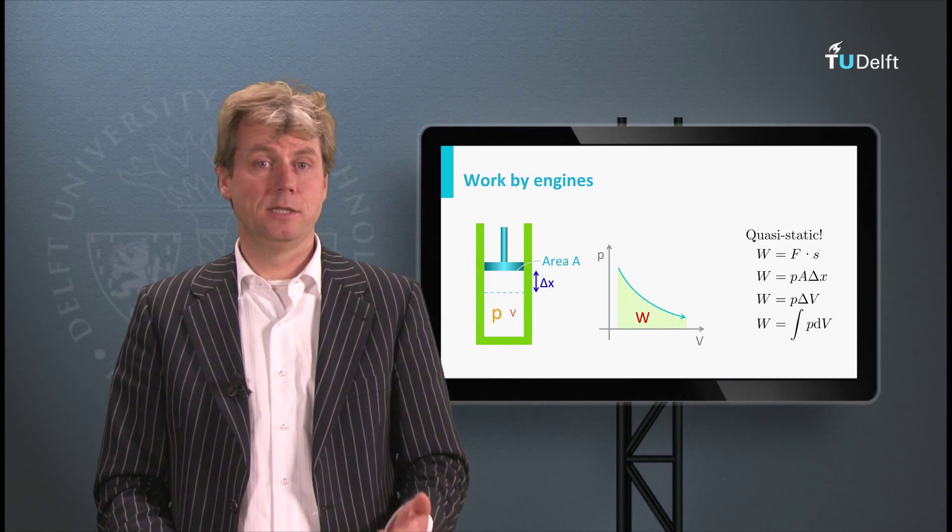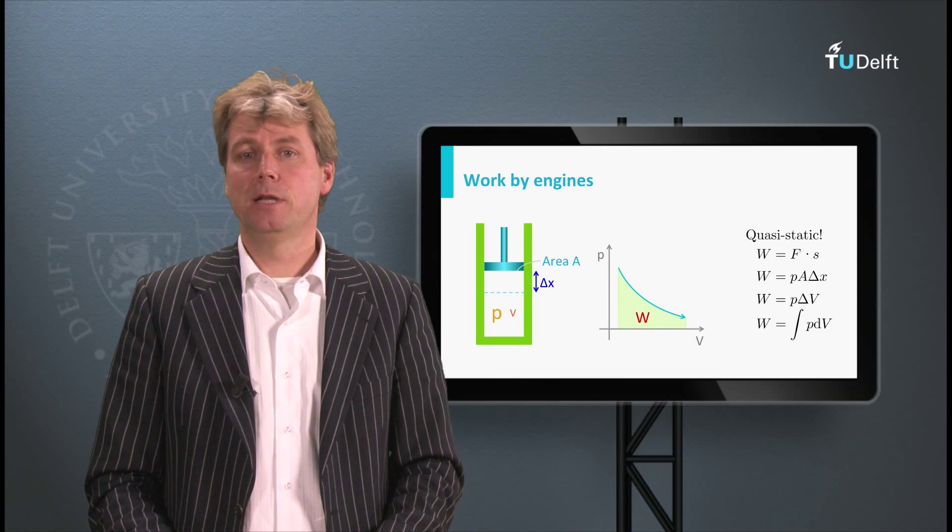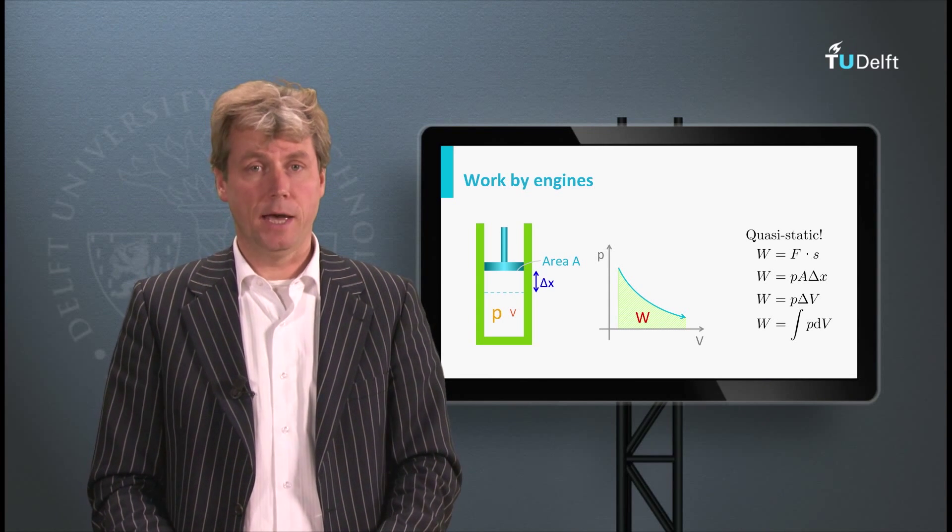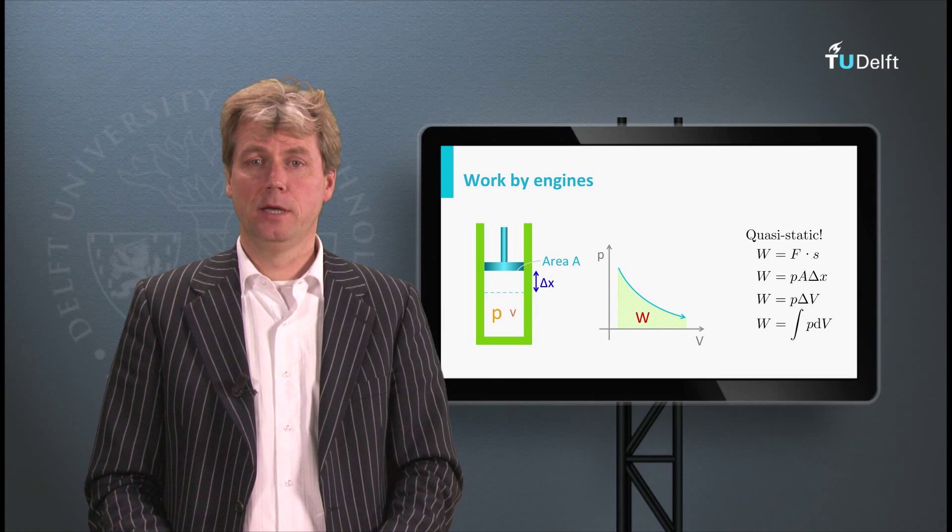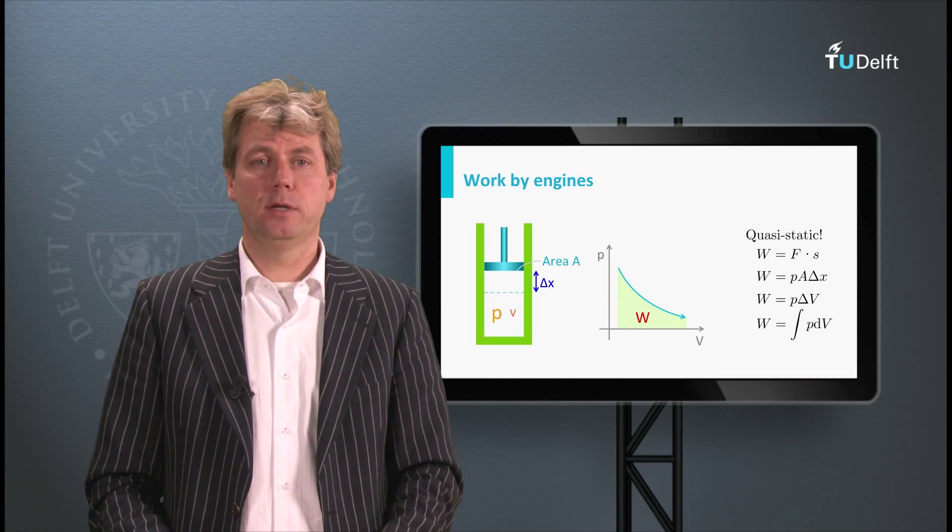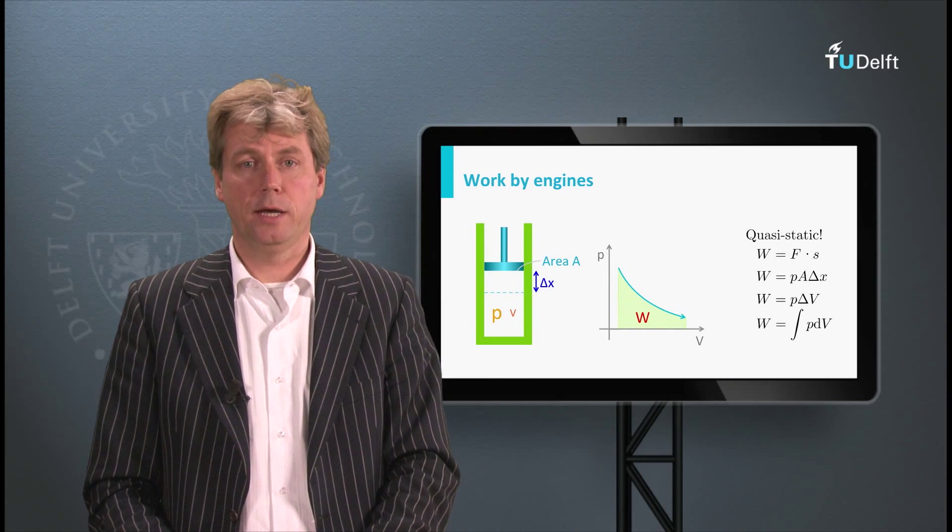And this means that it is basically the area underneath the graph in the PV diagram which shows the amount of energy that is performed when the gas expands. And this is the basic principle of how heat is converted into mechanical energy, into work.